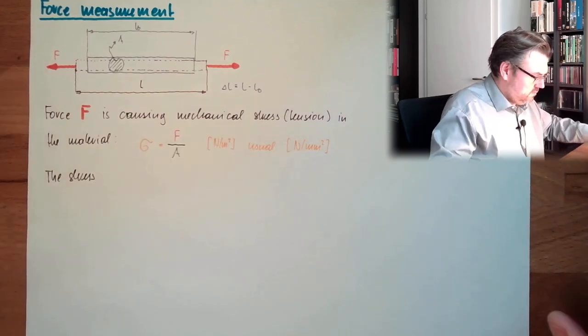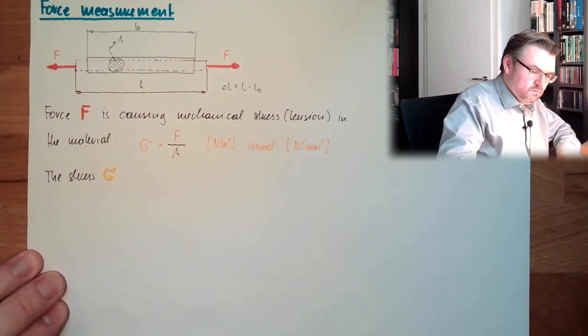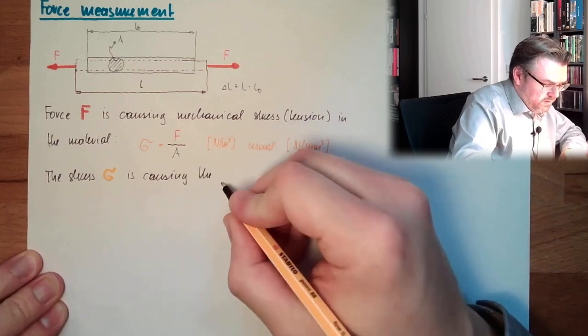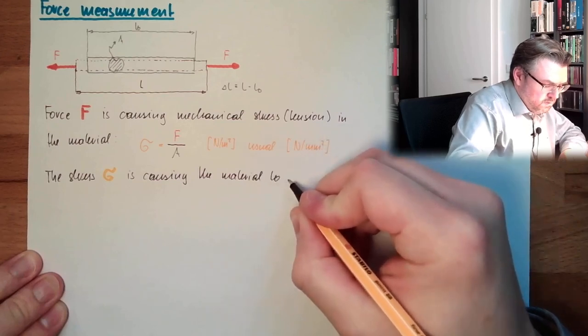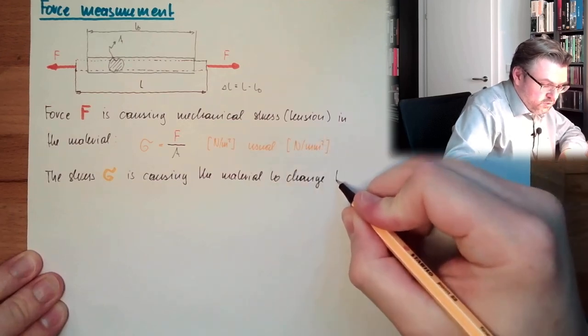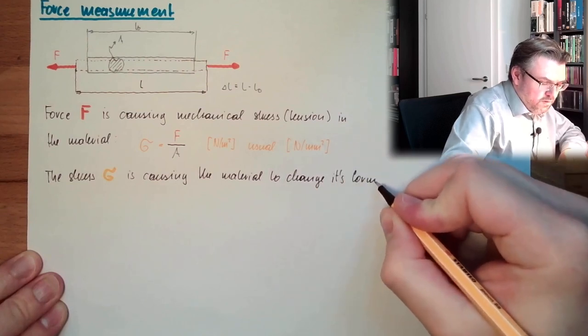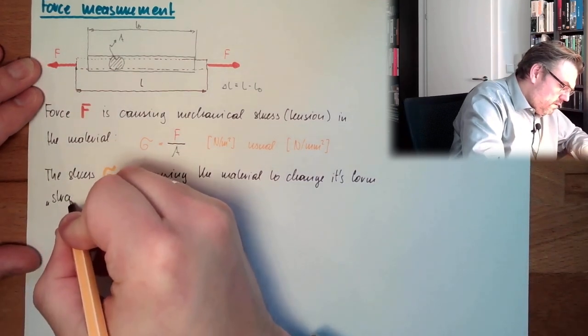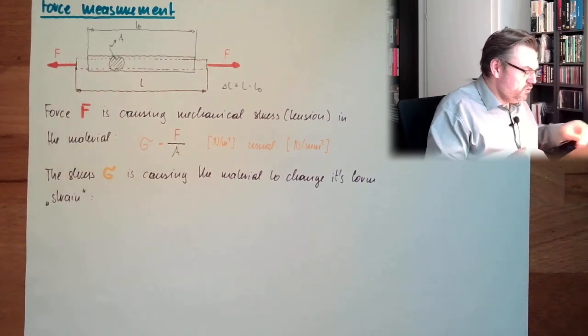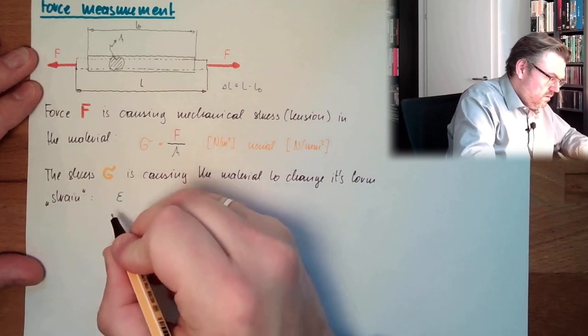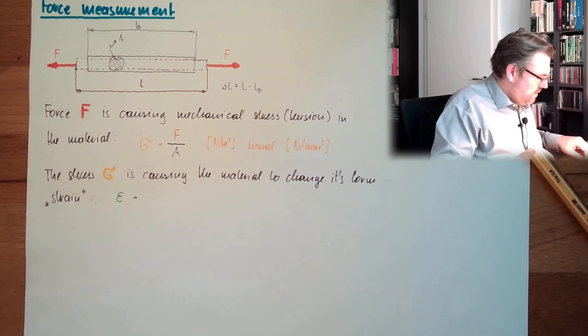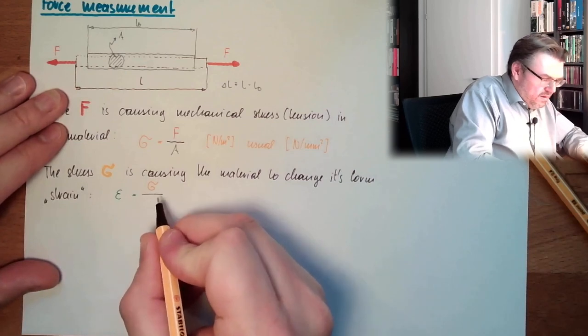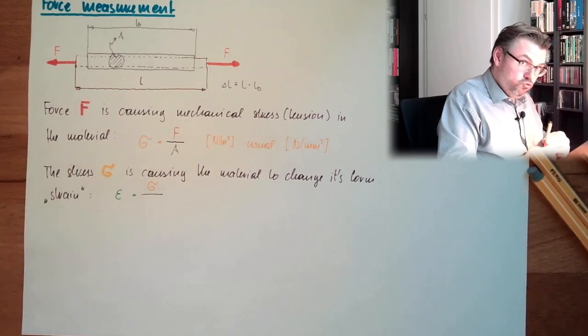The stress sigma is causing the material to change its form. This thing is called strain. And the strain is usually epsilon, and this equals sigma, the stress, divided by E.